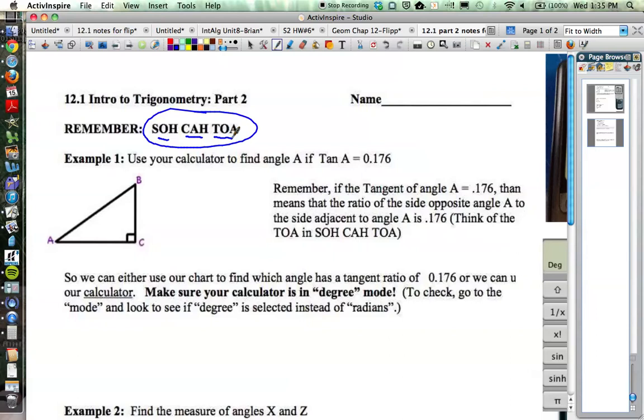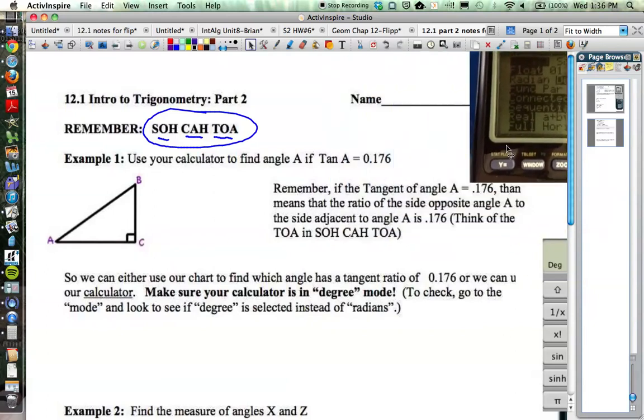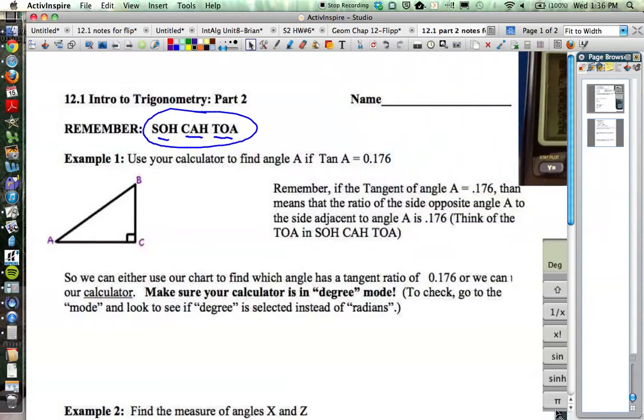But what we're going to do here is think about, if tangent of A is 0.176, how can we just go right to our calculator to figure this out? So on your calculator, you want to make sure that your calculator is in degree mode. If you have a graphing calculator, you might have switched this over when we were in class.